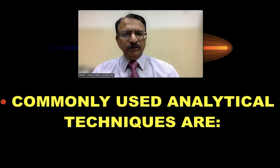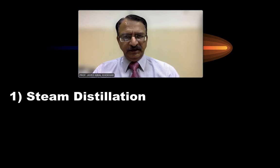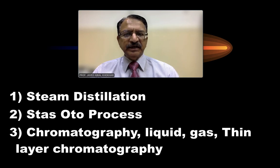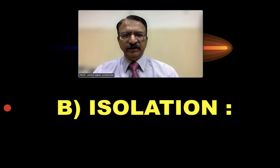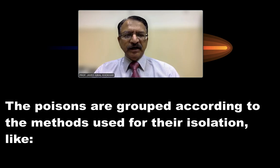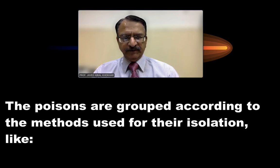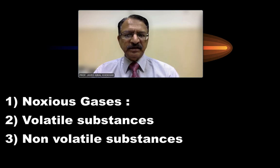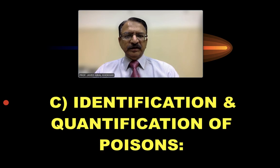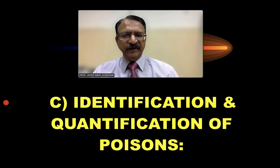The commonly used analytical techniques are steam distillation, the Stas-Otto process, chromatography (liquid, gas, and thin layer), spectroscopy, and electrophoresis. For isolation of the substance, poisons are grouped according to the method used — they are either noxious gases, volatile substances, or non-volatile substances — and then identification and quantification follow.